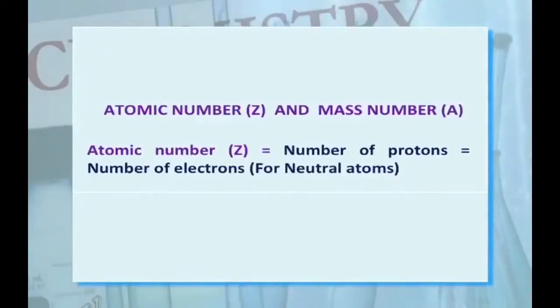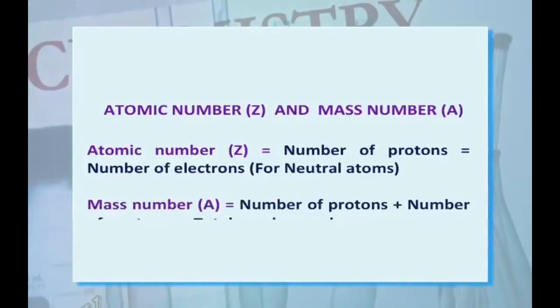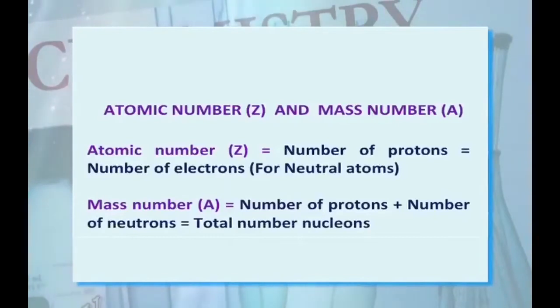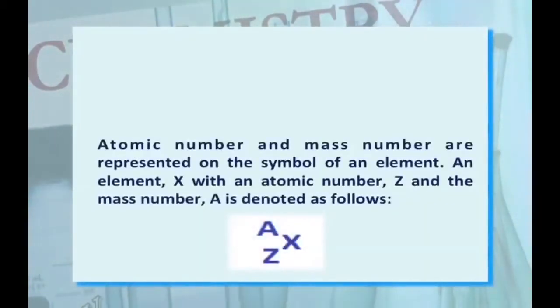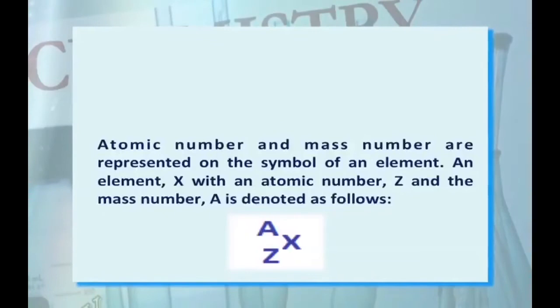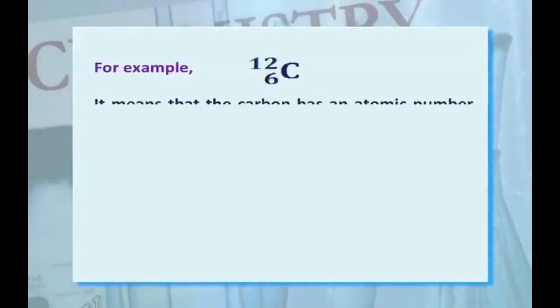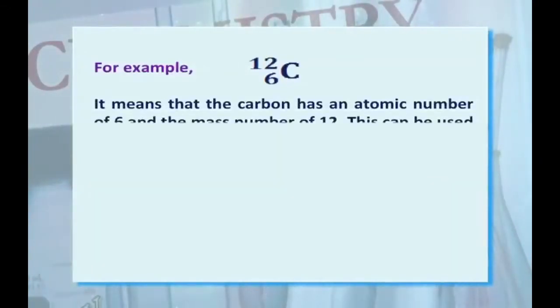The next concept is atomic number and mass number. Atomic number is equal to the number of protons, which is equal to the number of electrons for neutral atoms. Mass number is equal to the number of protons plus the number of neutrons, which equals the total number of nucleons. An element X with atomic number Z and mass number A is denoted accordingly. For example, Carbon-12 has atomic number 6 and mass number 12.